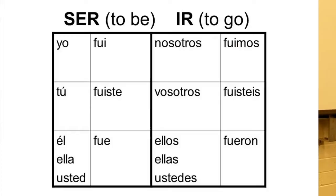Here's the good news — they both have the same conjugations. So all you have to learn is one set for both irregular verbs. Yo fui. Tú fuiste. Él, ella, usted fue. Nosotros fuimos. Vosotros fuisteis. And ellos, ellas, ustedes fueron.